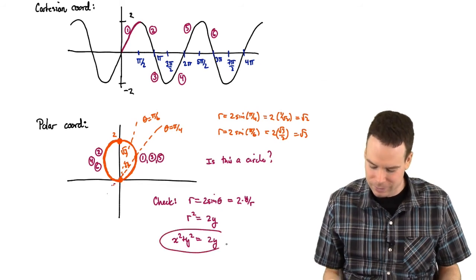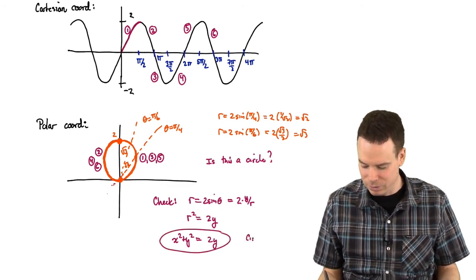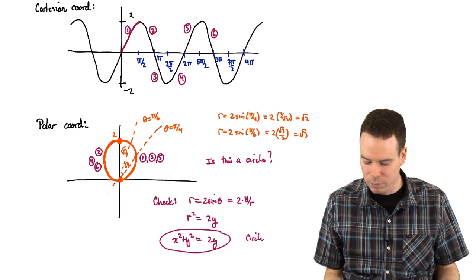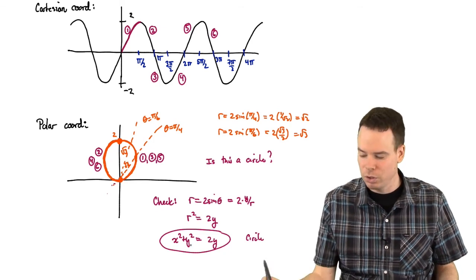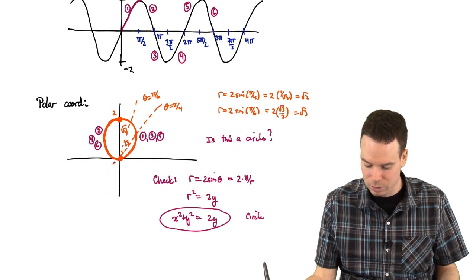Ah, there we go. That's a circle. So switching from polar coordinate description into the Cartesian coordinate description, we see that it's actually a circle.